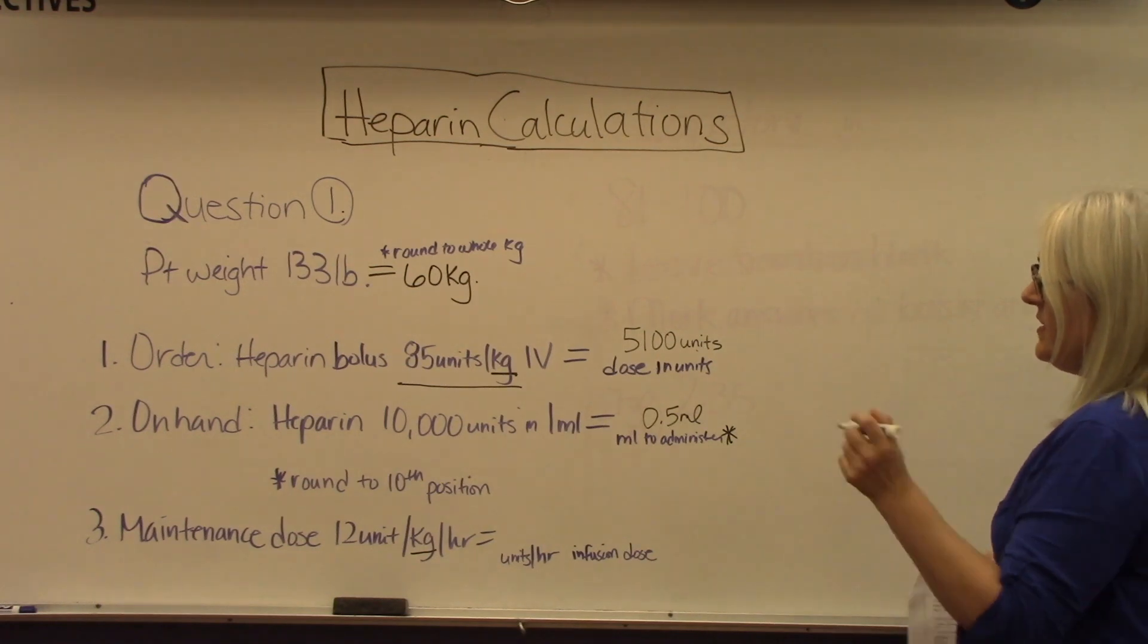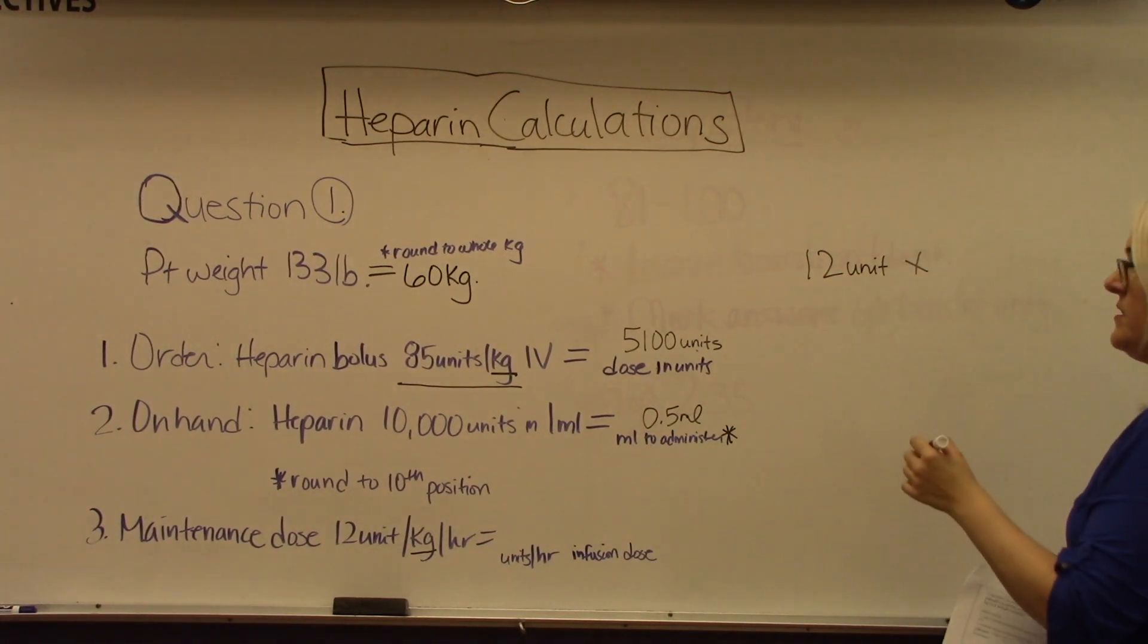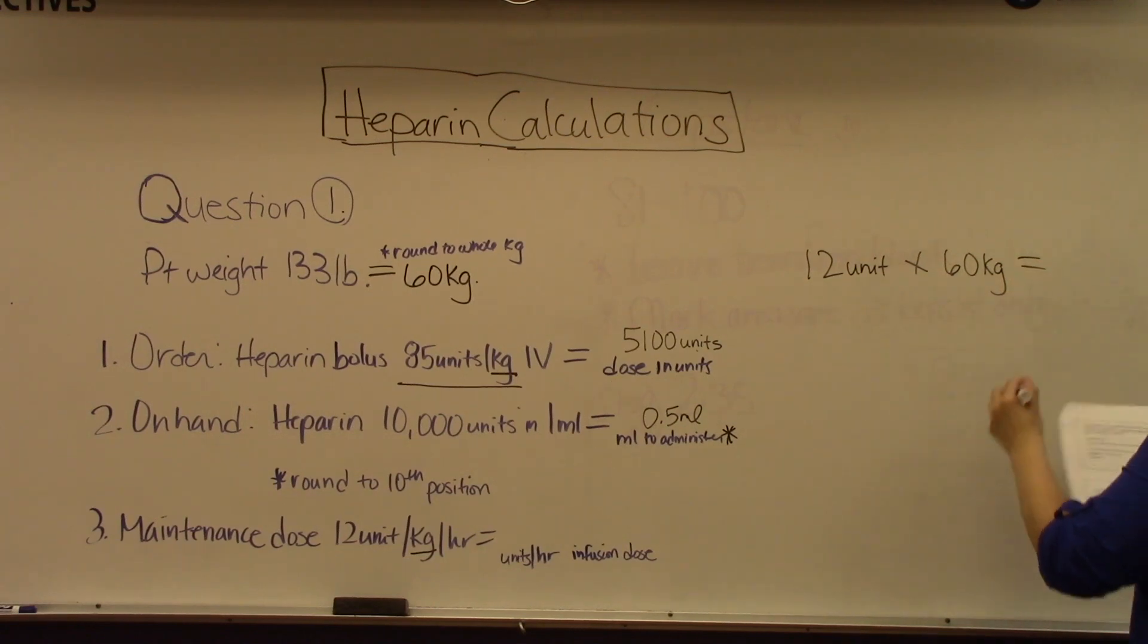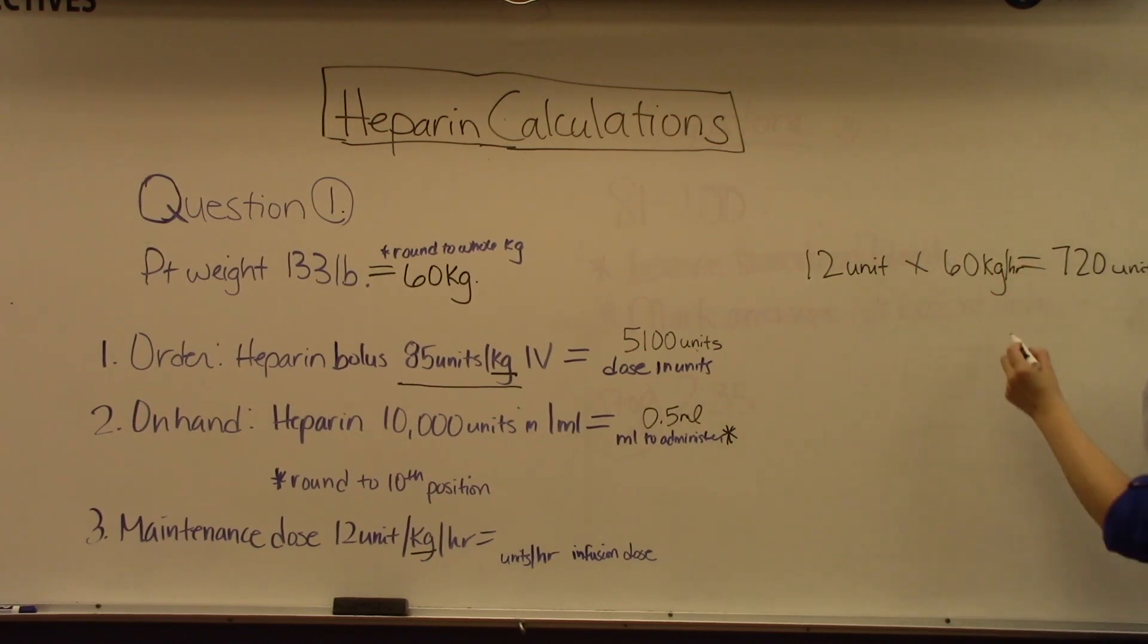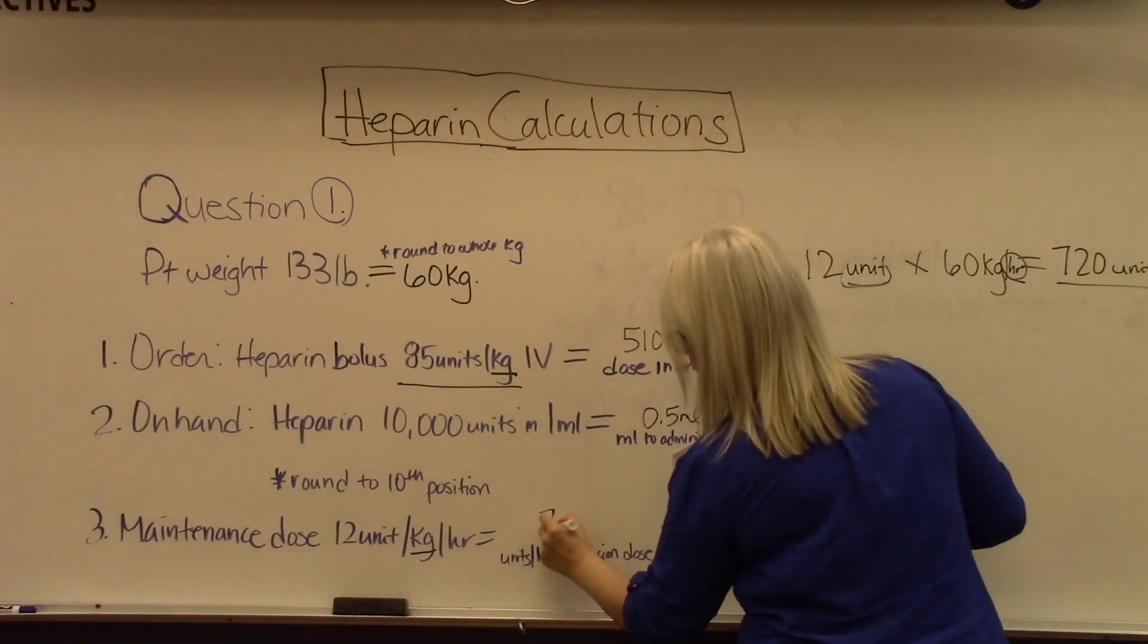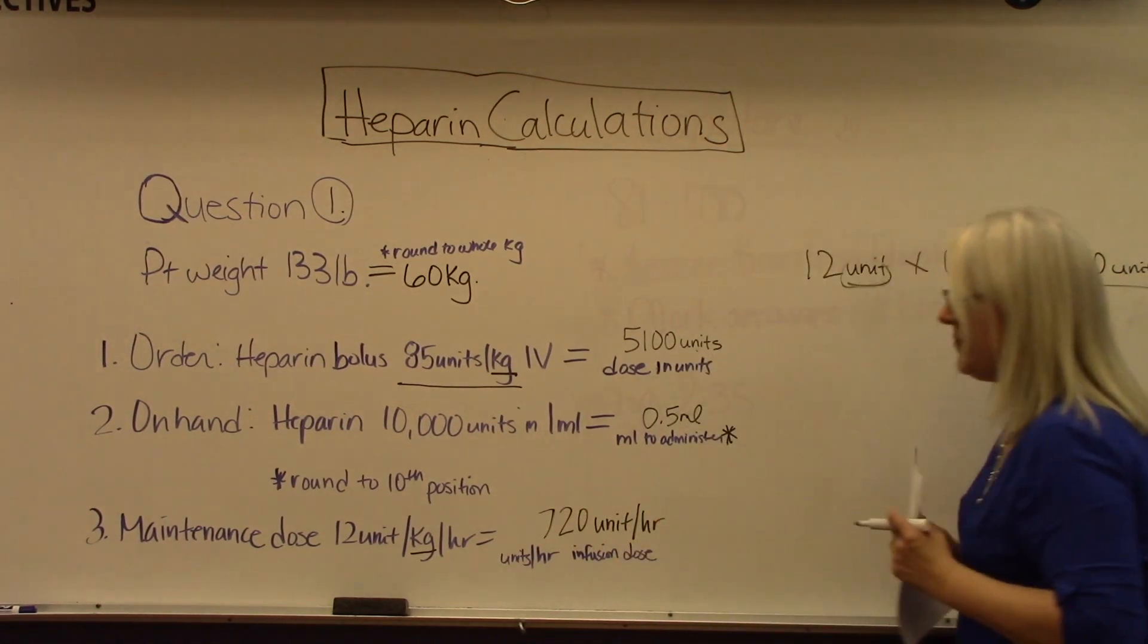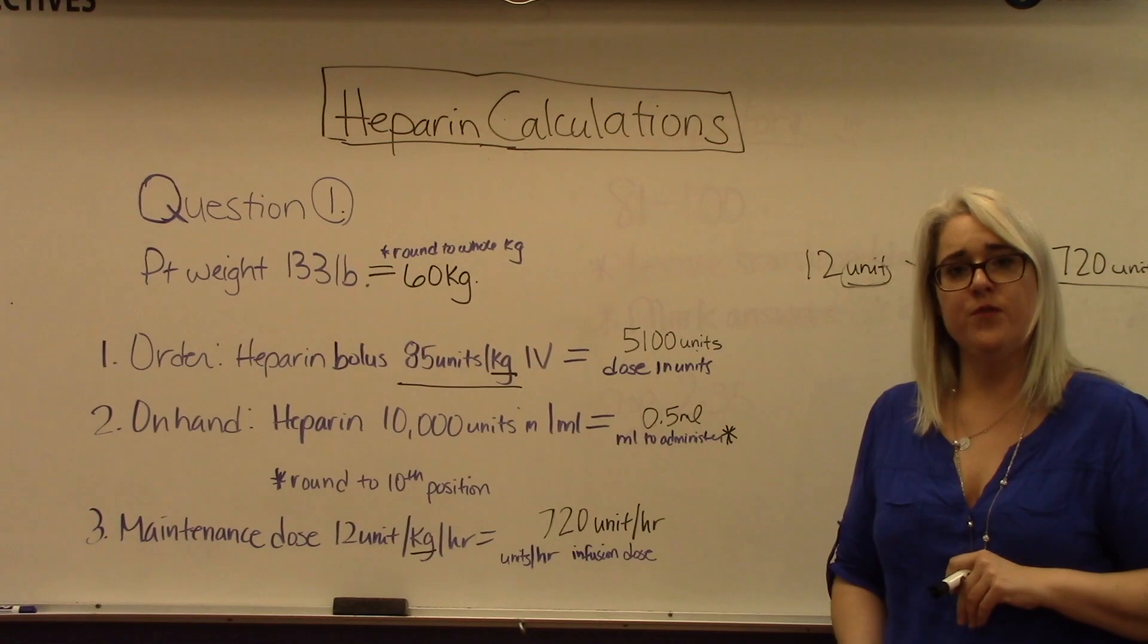For this part, you take 12 units times your 60 kilograms, and that should equal 720 units per hour. So our answer here is 720 units per hour. Those are the three answers and the method to finding those answers for the first question.